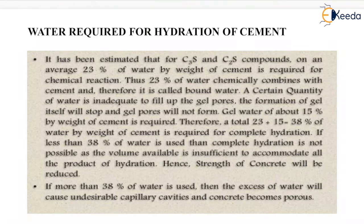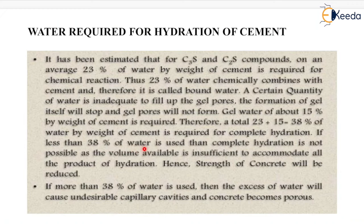This 23% of water chemically combines with cement and therefore it is called bound water. A certain quantity of water is required to fill up the gel pores; if inadequate, the formation of gel itself will stop and gel pores will not form. Gel water of about 15% by weight of cement is required. Therefore, a total of 23% plus 15% equals 38% of water by weight of cement is required for complete hydration. If less than 38% of water is used, complete hydration is not possible and strength of concrete will be reduced. If more than 38% of water is used, the excess water will cause undesirable capillary cavities and concrete becomes porous.